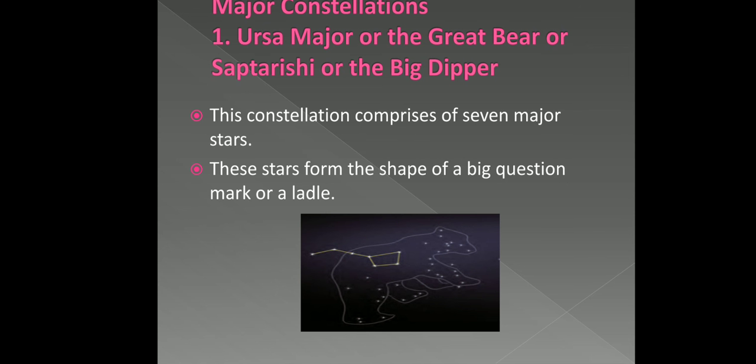Major constellation. Ursa Major. It is also called as Great Bear or Saptarishi or Big Dipper. So this Ursa Major constellation has 7 major stars. So these stars form a shape of a big question mark or a ladle.